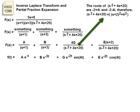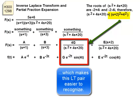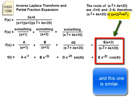The roots of the denominator are -2±4i. Therefore, (s+2)² + 4² is equivalent to the denominator, which makes this Laplace transform pair easier to recognize. And this one is similar.